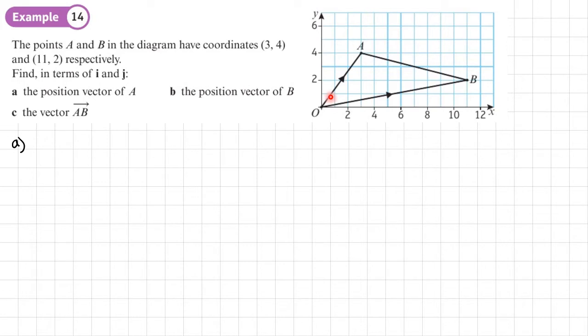The position vector of A, we write as OA. How do we get from the origin to that point? That's called the position vector of that point. So to get from the origin to that point, we're going to go 3 across and 4 up. Let's put the coordinates in I, J notation. It'd be 3I, 3 across and 4 up, 4J.